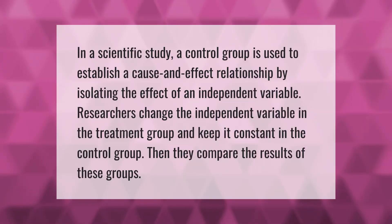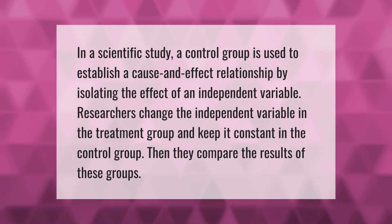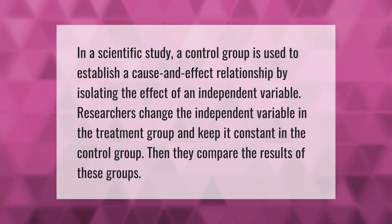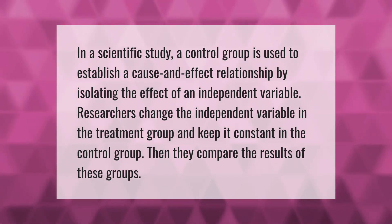In a scientific study, a control group is used to establish a cause-and-effect relationship by isolating the effect of an independent variable. Researchers change the independent variable in the treatment group and keep it constant in the control group, then they compare the results of these groups.